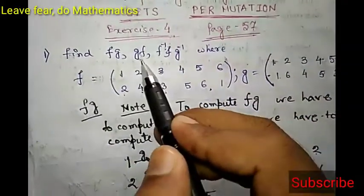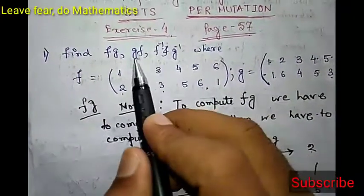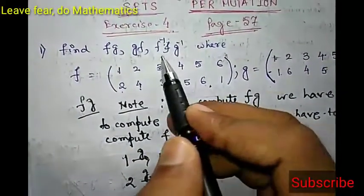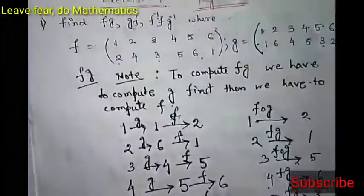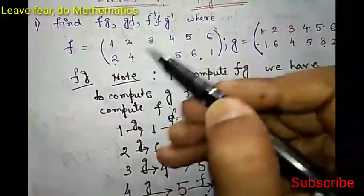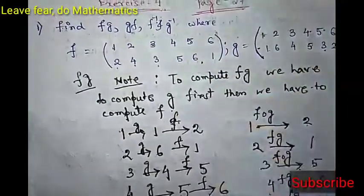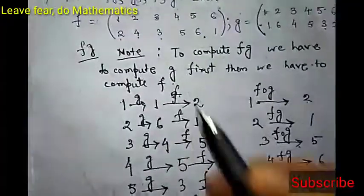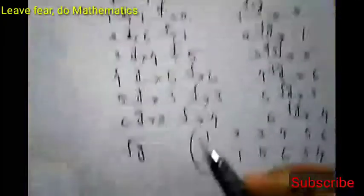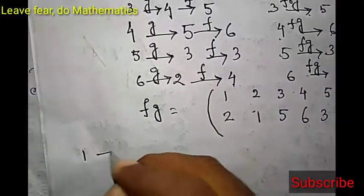Similarly you can find gf - I am leaving that as an exercise. Now we will calculate f inverse. F inverse is obtained by reversing the two rows. So under f, if 1 goes to 2, then 2 goes to 1 under f inverse.